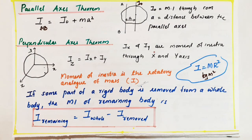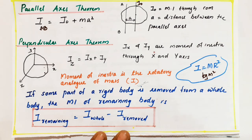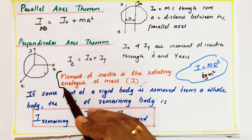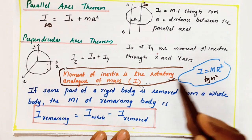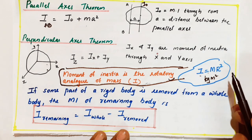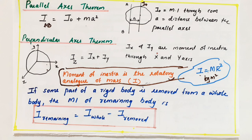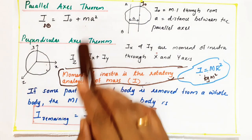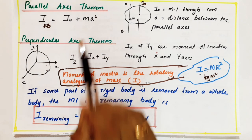Now we are talking about rotatory motion. Rotatory motion means the particle is rotating about a fixed axis. When the particle is rotating, mass is replaced by the analogous term called moment of inertia. Moment of inertia is the rotatory analog of mass, denoted by I. Its general formula is I equals mr², and its unit is kilogram·meter². To find moment of inertia, we need two theorems: the parallel axis theorem and the perpendicular axis theorem.